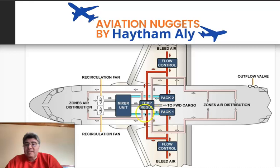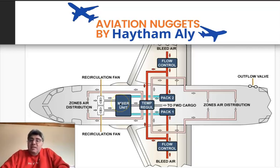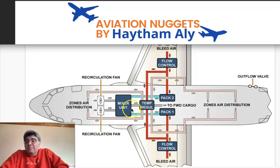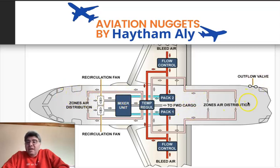The mixer unit mixes the cyan-colored cold air from the packs with air from the cockpit and cabin via the recirculation fans. This saves money and fuel because we are not entirely dependent on fresh air from the packs alone. The mixer unit then supplies the three zones: cockpit, forward cabin, and aft cabin.